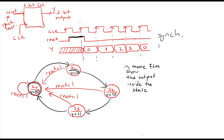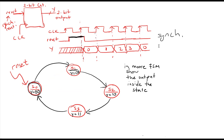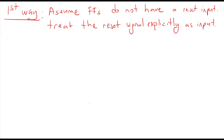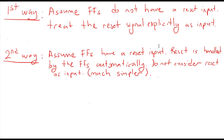To make the state diagram simpler, the reset signal is shown going only to S0. Now the circuit will be designed in two different ways. In the first way, flip-flops do not have a reset input, so reset is treated explicitly as an input. In the second way, flip-flops have a reset input, so reset is handled automatically — making that approach much simpler.